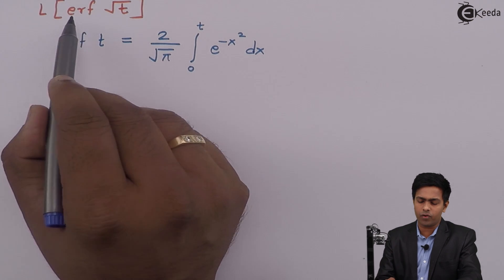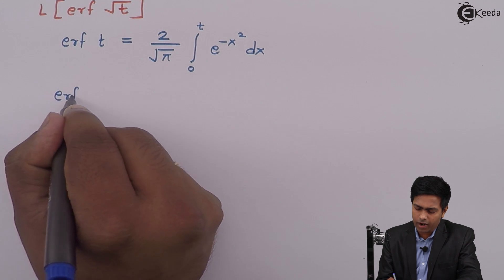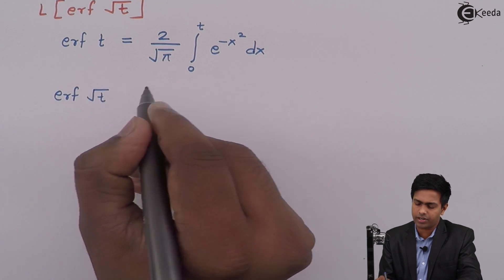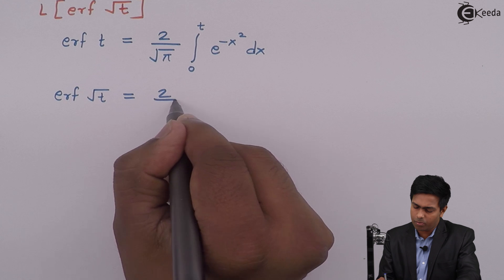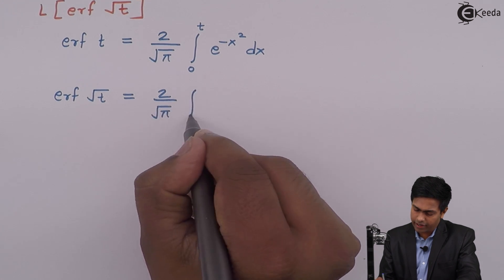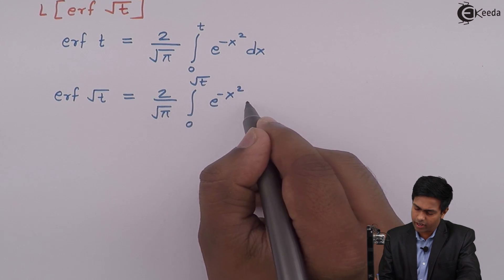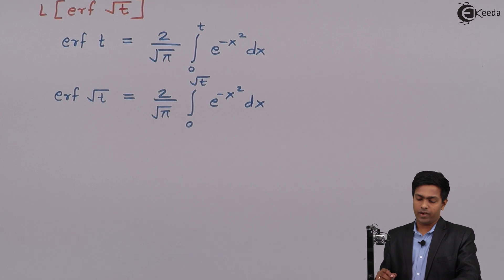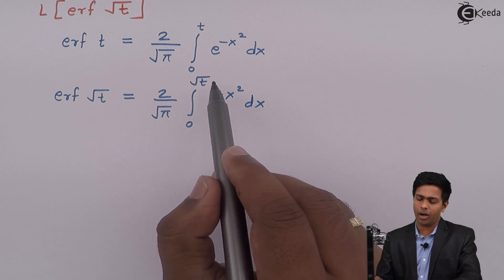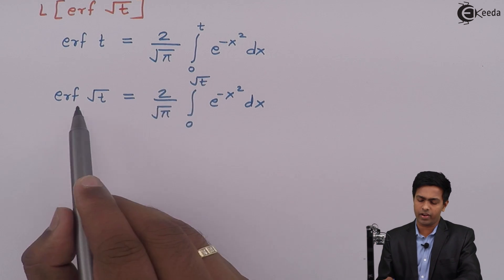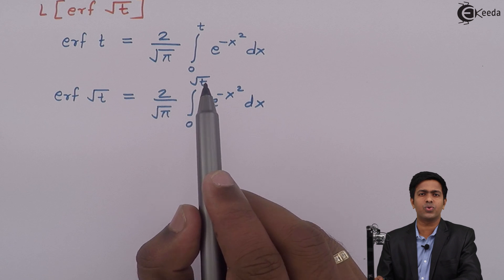Now in our question we want to find the Laplace of error function of √t. So first let me find the value of error function of √t in terms of integration. Error function of √t is given by (2/√π) × integration from 0 to √t of e^(−x²) dx. Whenever the function changes — say here we have √t — the upper limit of the integration will change accordingly.